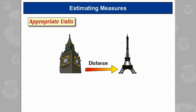Okay, just one more. What about the distance from London to Paris? Well, that's about 340 kilometres. I definitely wouldn't say it's 340,000 metres or 34 million centimetres.